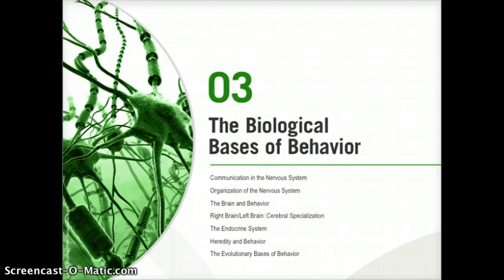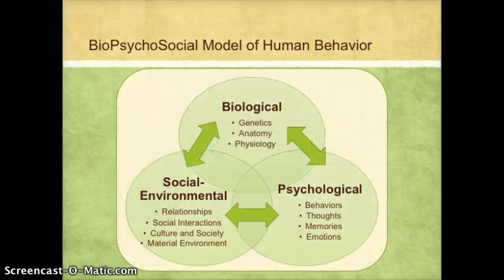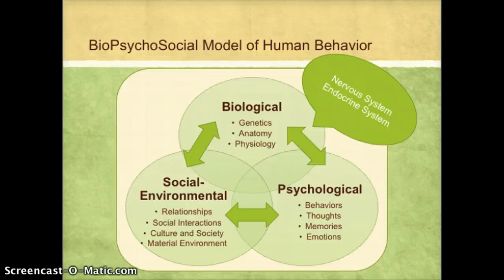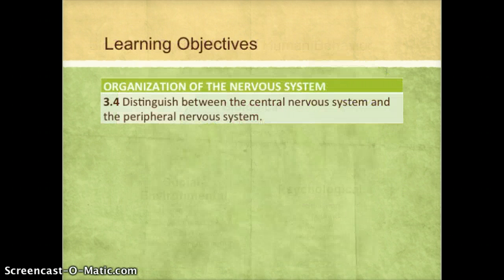Chapter 3: The Biological Bases of Behavior. In this chapter, we're focusing on the biological piece of the biopsychosocial model of human behavior, specifically looking at the nervous system and endocrine system. We're going to continue looking at the nervous system in this video, starting with the basic organization of the nervous system.